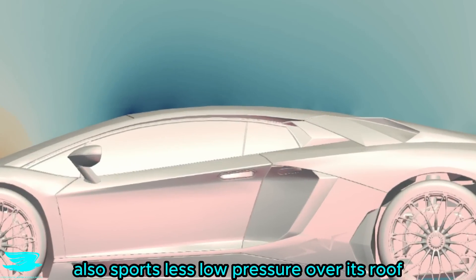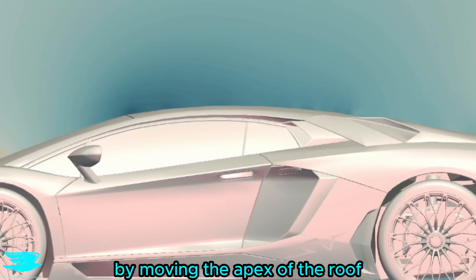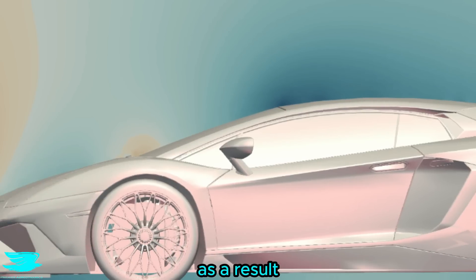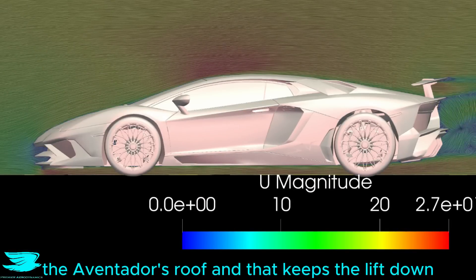The Aventador also sports less low pressure over its roof, and that was cleverly done by moving the apex of the roof back, which allows a less steep windshield too. As a result, the flow doesn't accelerate as much over the Aventador's roof and that keeps the lift down.